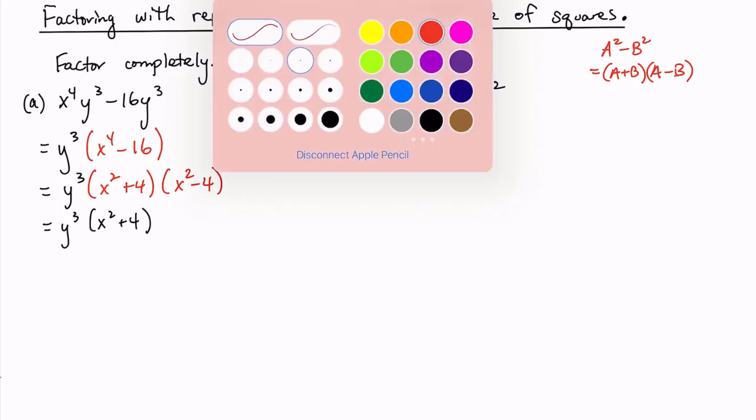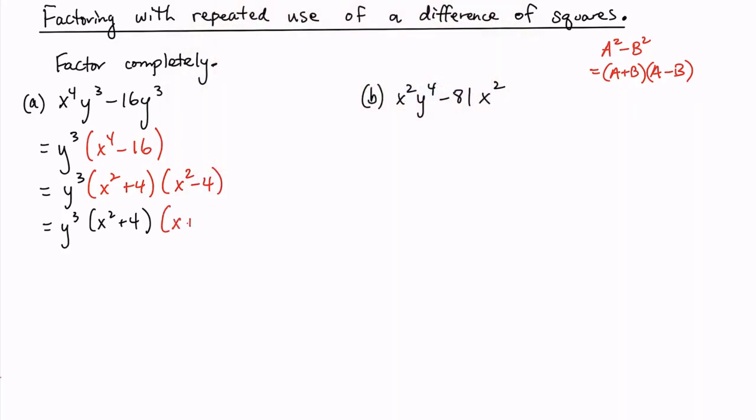And what do we have left? We have x plus 2 times the quantity x minus 2. So how many factors do we have? Well, we have a factor here. Factor of y with multiplicity 3.